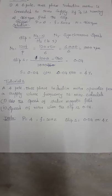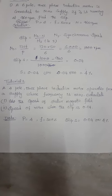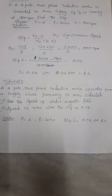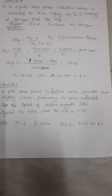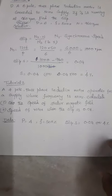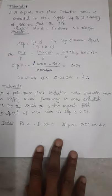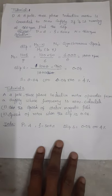So list out the given details and find the two subdivisions one by one. The given details are P is equal to 4, f is equal to 50 hertz, slip is 4 percentage.